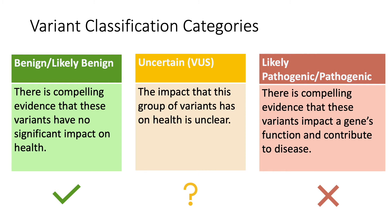A VUS means there is not enough evidence to say that a variant is associated with health or developmental differences — more information is needed. If not done as part of initial testing, parental testing often can be helpful in increasing our understanding of a VUS. Understanding whether a variant was inherited from a parent or is new and unique in the child can help us understand if it is linked to autism or developmental differences. Emerging evidence can change our understanding of a variant and alter its classification over time.